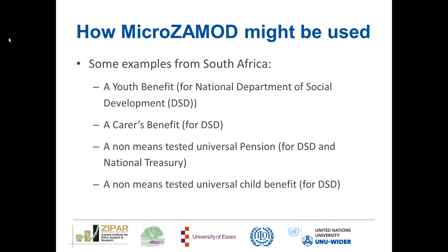Here are examples of how MicroZamod might be used, drawn from South Africa. Using the South African tax benefit microsimulation model SAMOD, we were able to simulate a youth benefit for unemployed young people for the National Department of Social Development. We also simulated a carer's benefit, since in South Africa only a child benefit exists with no benefit for the carer. We simulated a non-means tested universal pension for DSD and National Treasury, and most recently simulated a non-means tested universal child benefit for the National Department of Social Development.